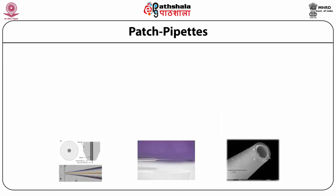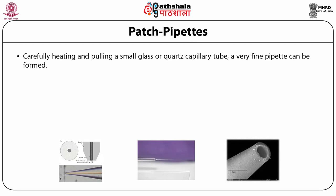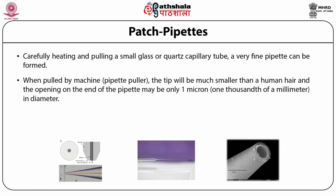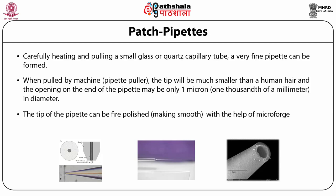Patch pipettes are the most important part of any recording. They can be made by carefully heating and pulling a small glass or quartz capillary tube to form a very fine pipette tip. When pulled by a pipette puller, the tip will be much smaller than a human hair and the opening on the end of the pipette may be only one micron in diameter. The tip of the pipette can be fire polished — meaning made smooth with the help of a microforge.